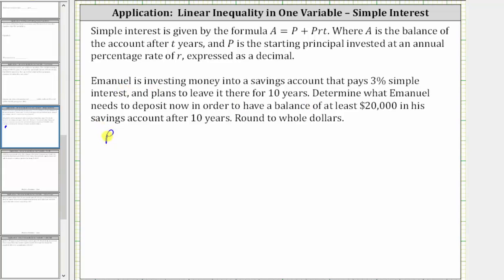So Emanuel's account balance after 10 years is equal to P, the starting amount which is unknown, plus P, again unknown, times R as a decimal, so times 0.03, times T, which is time in years, which is 10, and because he wants at least $20,000, this quantity must be greater than or equal to 20,000.